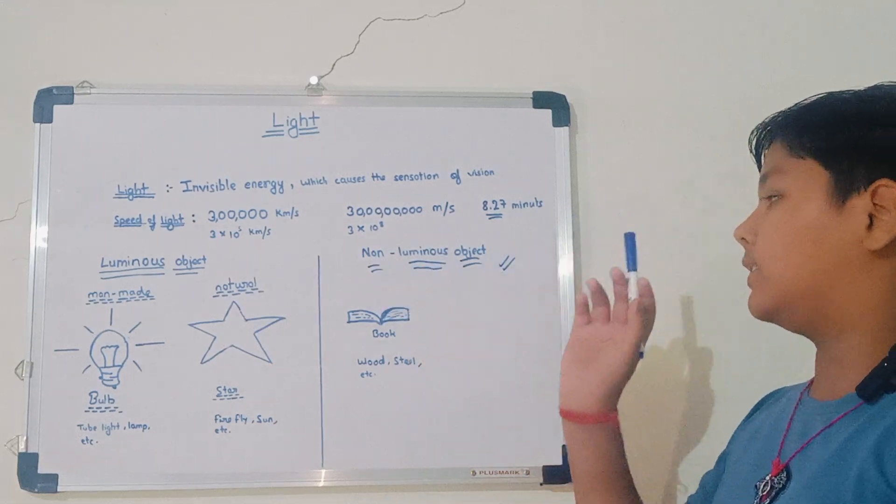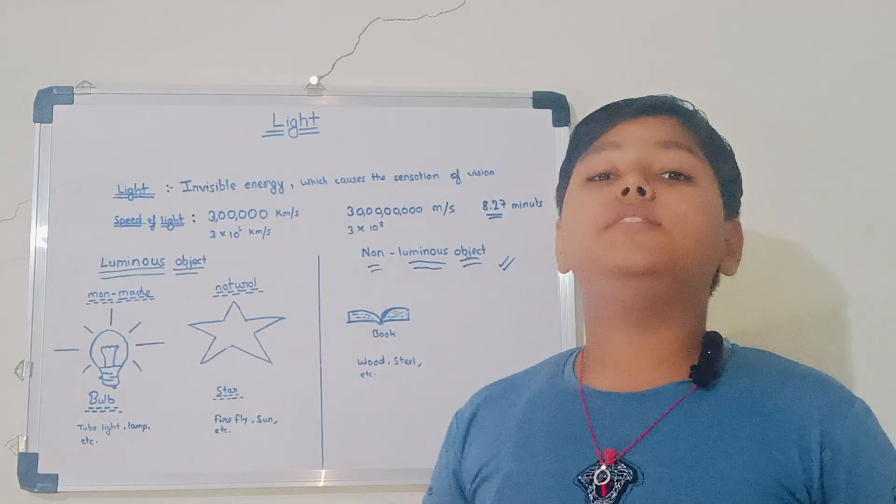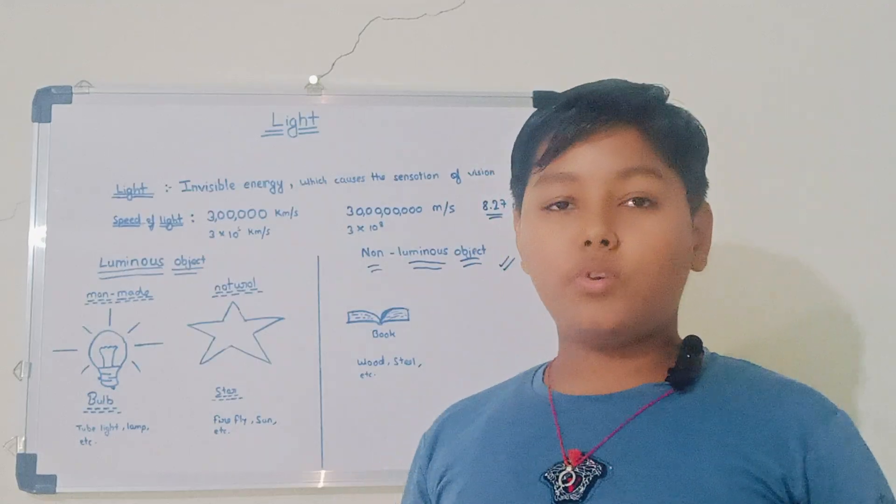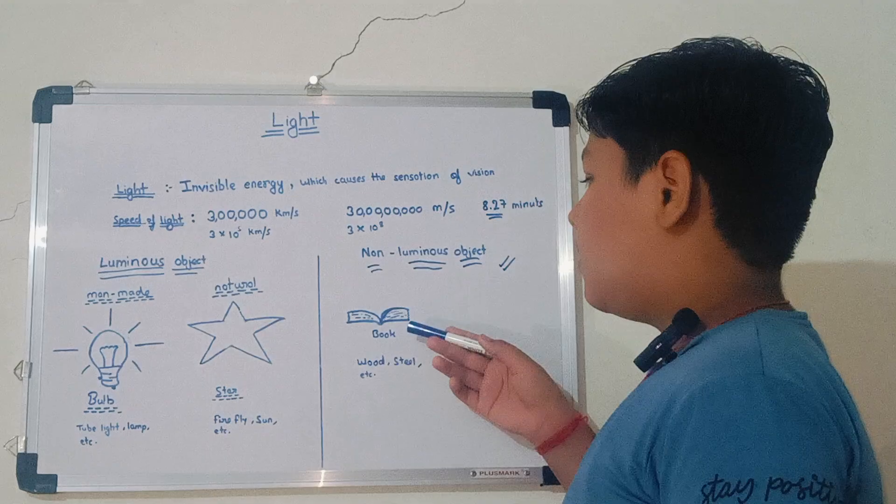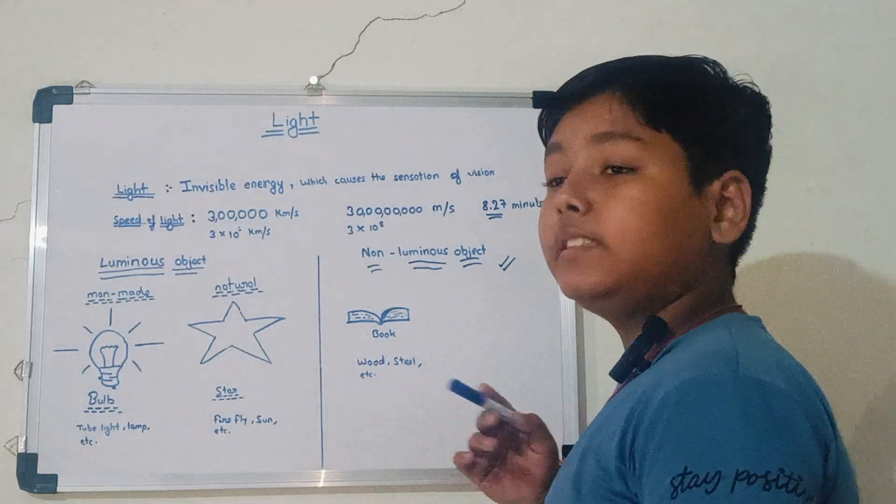The next are non-luminous objects. The objects which do not produce light of their own are called non-luminous objects. Example, book, wood, steel.